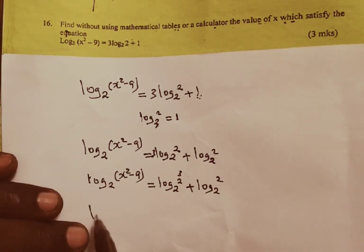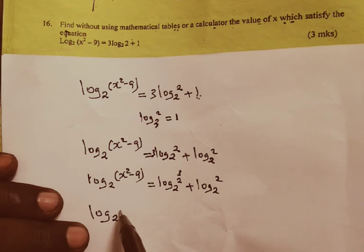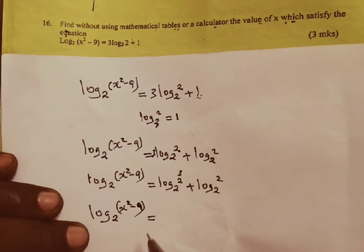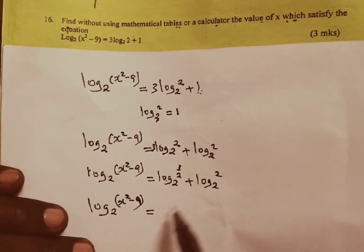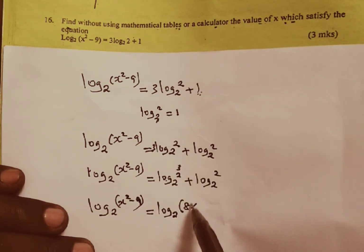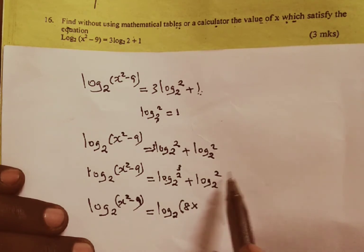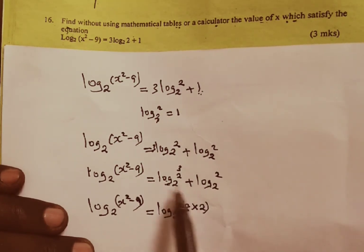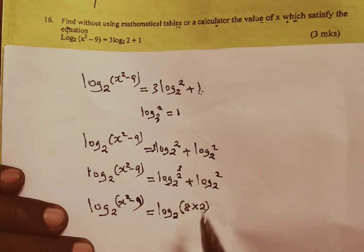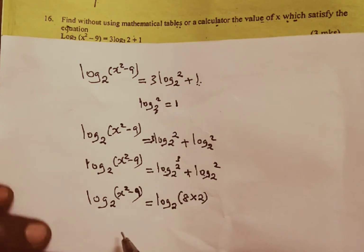Here we are going to have the log of base 2 into we have x squared minus 9. And this one is going to be equal to, you realize the log of base 2 is common here, so we factor log base 2 outside, we multiply by 2 raised to 3 plus 2 raised to 1. Since these two logarithms are connected by an addition sign, we are going to multiply their powers.